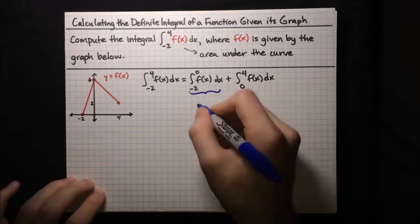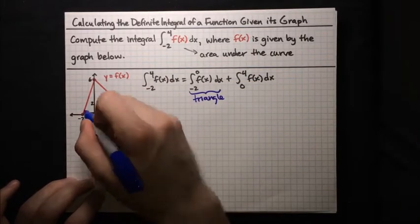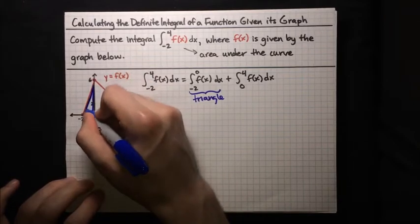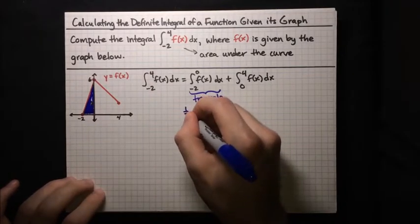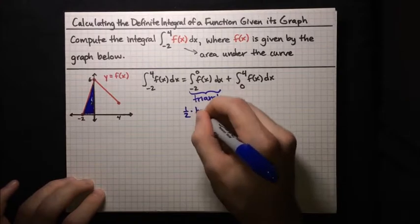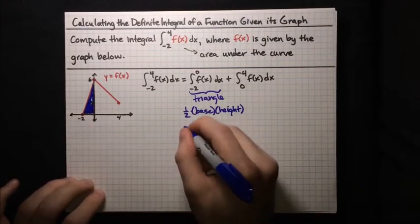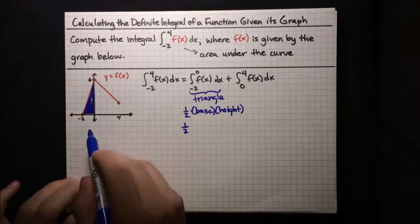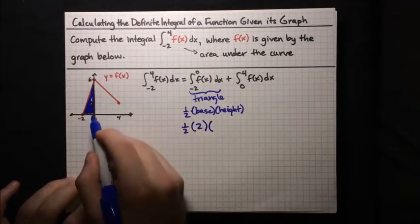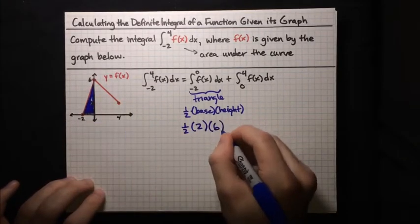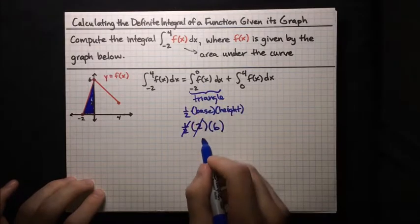This first integral corresponds to the triangle from negative 2 to 0. To find its area, we use: area of a triangle equals one-half times base times height. The base runs from negative 2 to 0, so its length is 2. The height goes up to the peak, which is at 6. So one-half times 2 times 6 — the half and 2 cancel — giving us 6. So this integral equals 6.